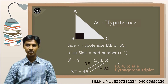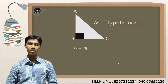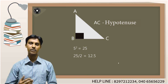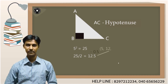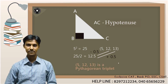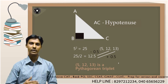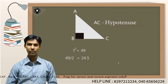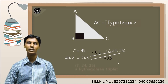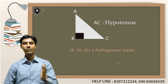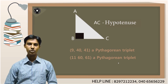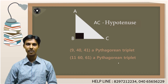Let me take a different odd number. For example, take 5: 5 squared is 25, divided by 2 is 12.5. Subtract 0.5 to get 12; add 0.5 to get 13. So the Pythagorean triplet is 5, 12, 13. If you take 7: 7 squared is 49, divided by 2 is 24.5. Minus 0.5 is 24; plus 0.5 is 25. So 7, 24, 25 forms a Pythagorean triplet. Similarly, 9, 40, 41 and 11, 60, 61 will each form a Pythagorean triplet. These are cases where the first number chosen is an odd number.